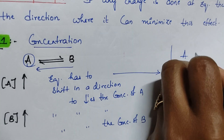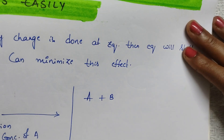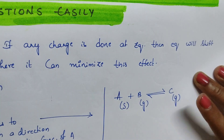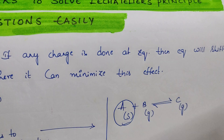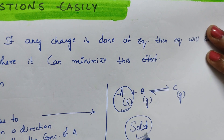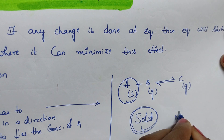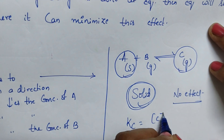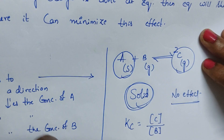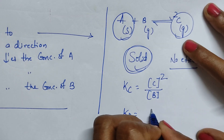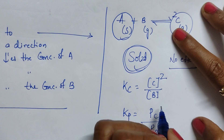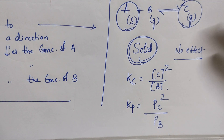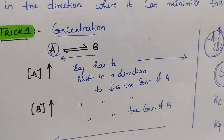One more important point under Trick Number One: if any solid is present — for example, A plus B gives rise to C, where A is a solid and B and C are gases — changing the concentration of A has no effect on equilibrium. Solids do not appear in the expression for Kc or Kp. If you increase or decrease the concentration of a solid, there is no change in equilibrium.